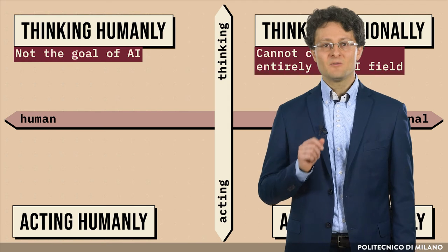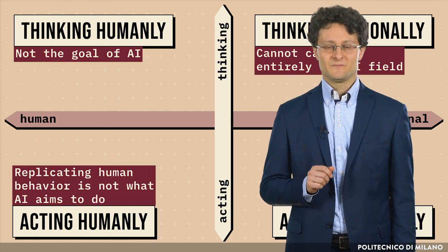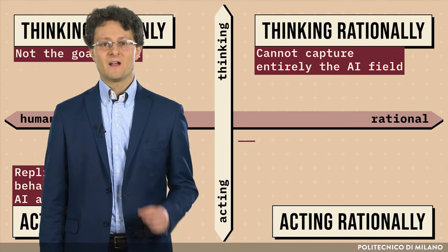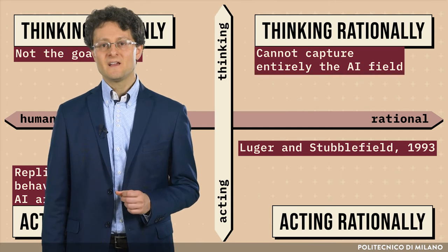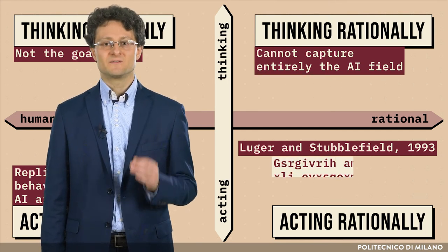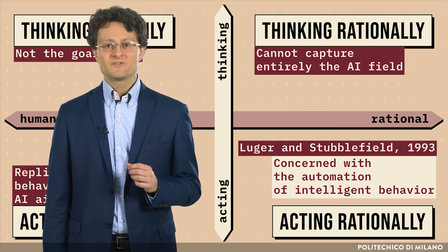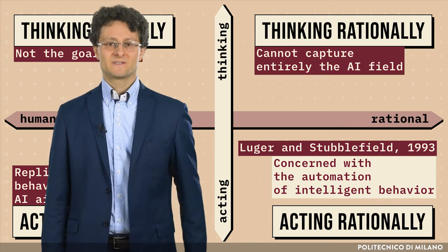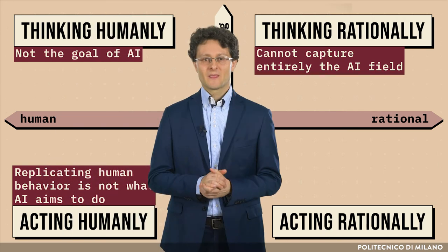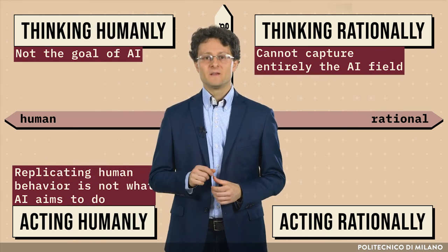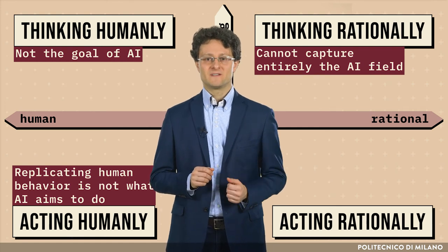However, replicating human behavior is not necessarily what AI aims to do. Finally, as suggested by Luger and Stubfield in 1993, AI is the branch of computer science concerned with the automation of intelligent behavior, where intelligence is measured with some formal metrics. Acting rationally is different from acting humanly — for instance, a human being may make mistakes, while a computer program could not make mistakes.